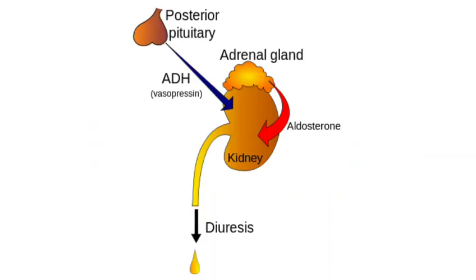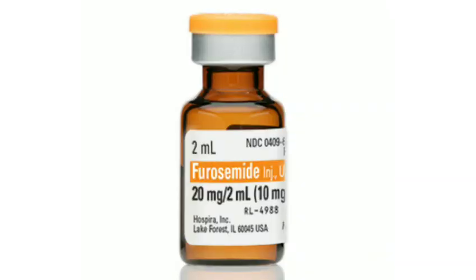Then diuretics — a drug that increases the volume and frequency of urine, commonly used in kidney failure patients. For example, furosemide, and a common diuretic is Lasix.